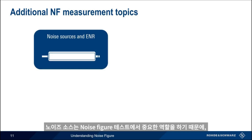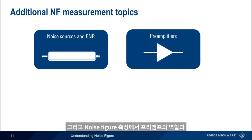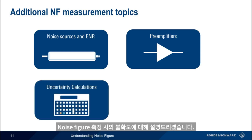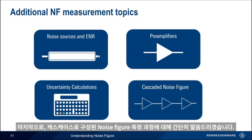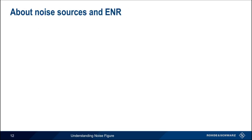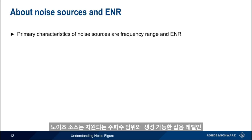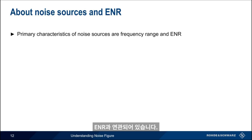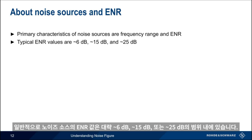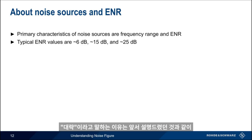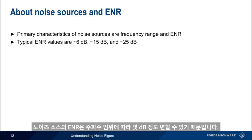Since noise sources play a critical role in noise figure testing, let's talk about sources and ENR in more detail. The primary characteristics are the supported frequency range and ENR — that is, the level of noise the source can produce. Typically, noise source ENR values fall in the ranges of approximately 6 dB, 15 dB, or 25 dB. The reason we say approximately is that a source's ENR normally varies by a few dB over its frequency range. 15 dB is the most common of these values.